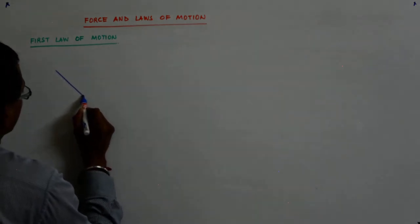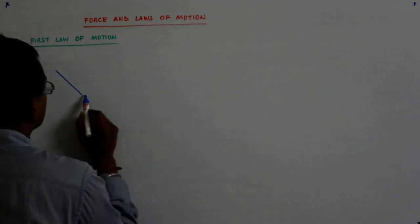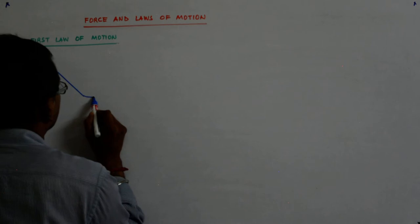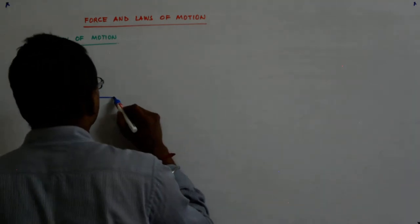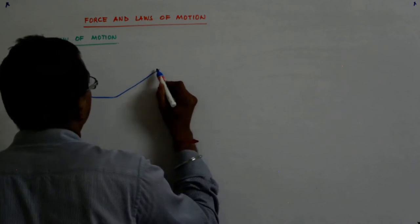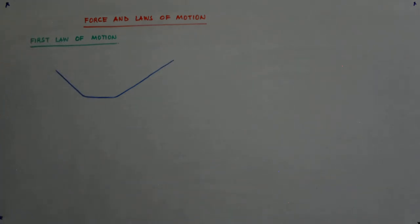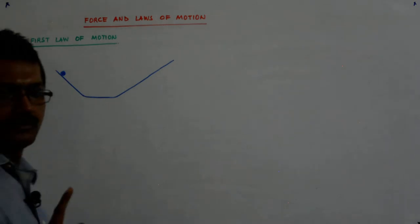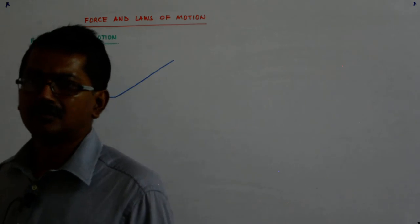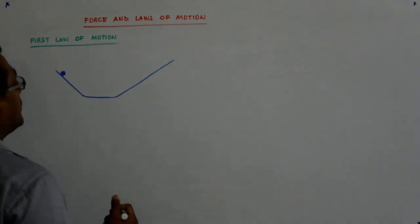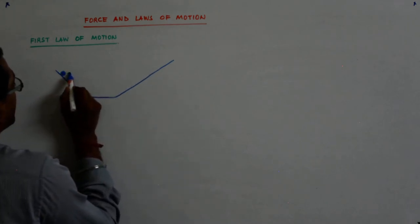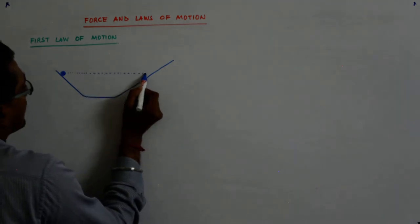He took an inclined plane and then here he took another inclined plane. Here he took another inclined plane and he put a ball here and when released from here he observed one thing. That is a very simple thing that we will say it is so trivial. But look at how brilliant his deductions were. He observed that if this ball is left from here then it tends to attain the same height.